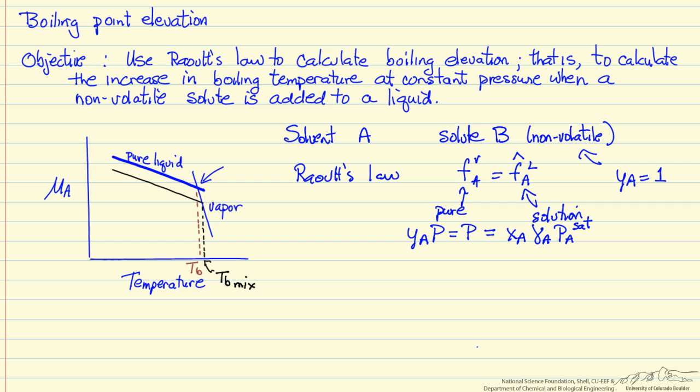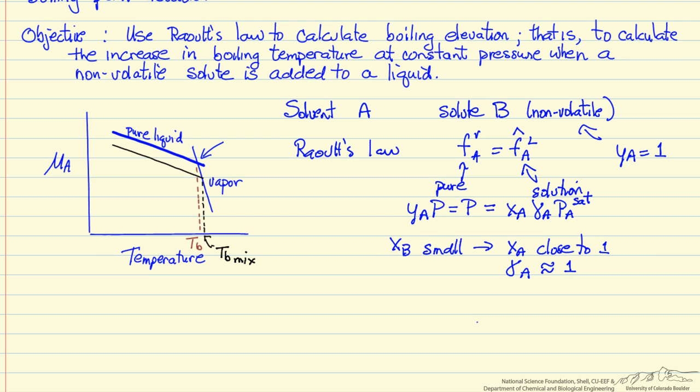Now if the mole fraction of the solute is small, so the mole fraction of A is close to 1, then gamma A is approximately 1, and we have the simplified version of Raoult's Law.